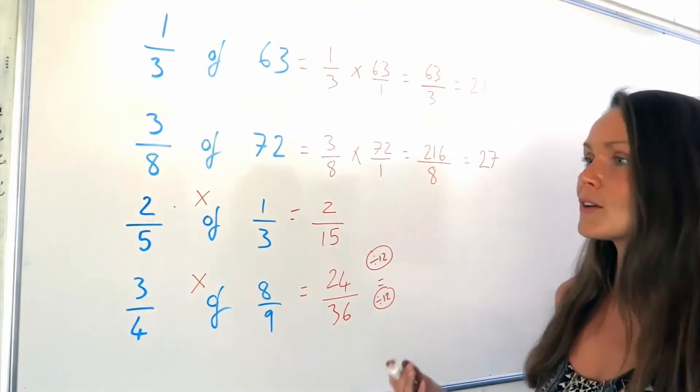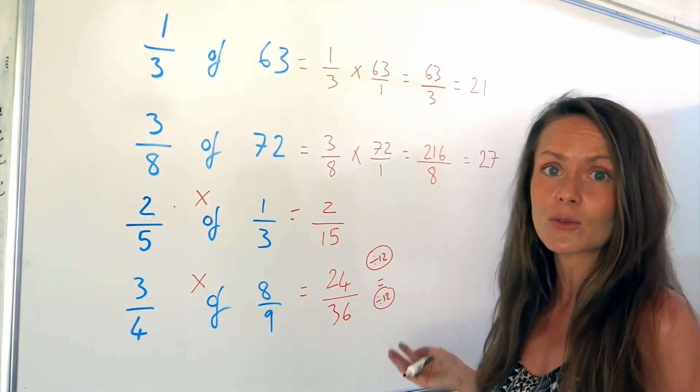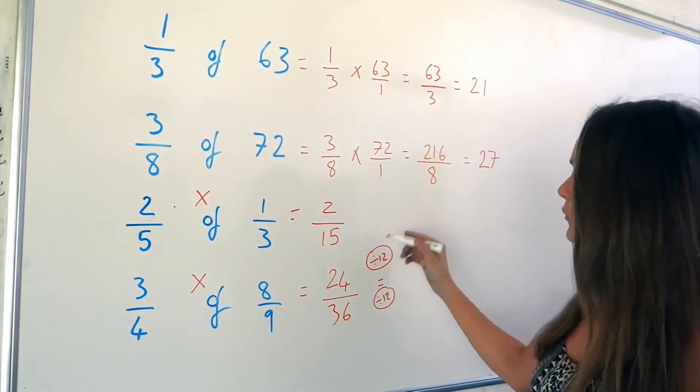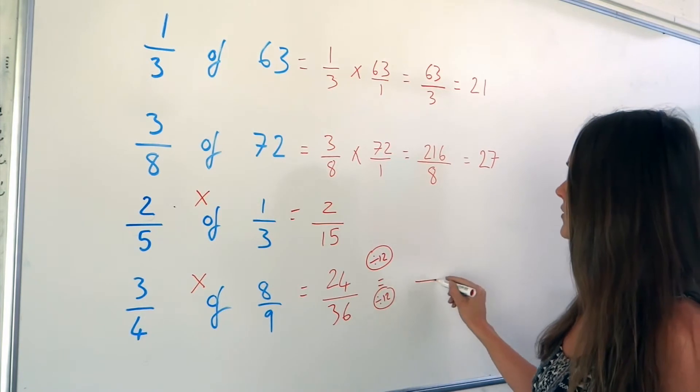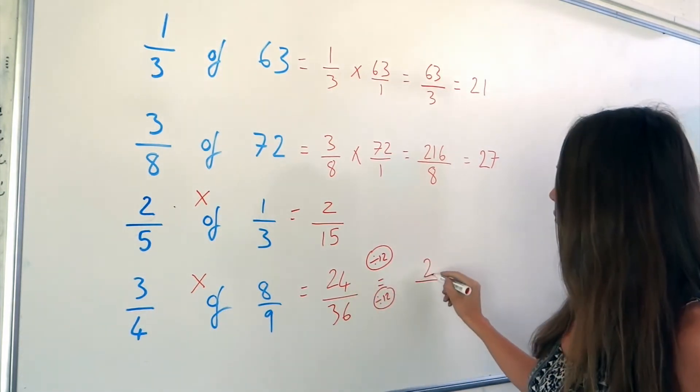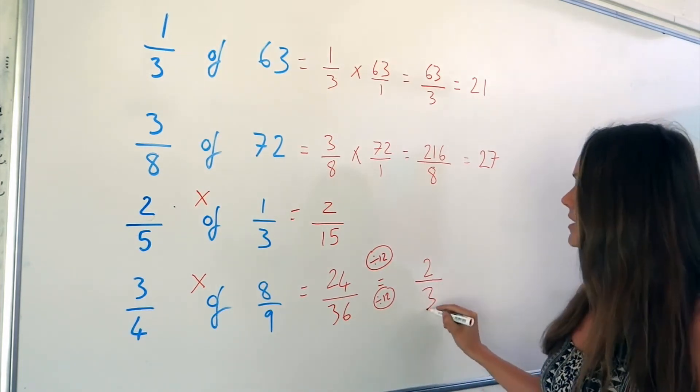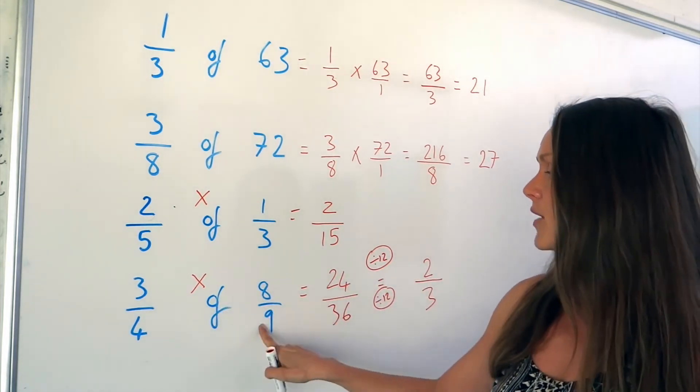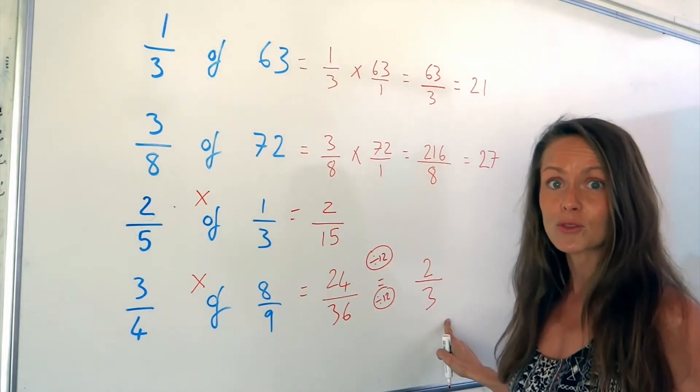It doesn't matter if you can't spot it. It will just take you a little bit longer to find your simplified fraction. But if you can, you'll go straight to the final answer. So 24 divided by 12 is 2. And 36 divided by 12 is 3. So there we go. 3 quarters of 8 ninths is equal to 2 thirds.